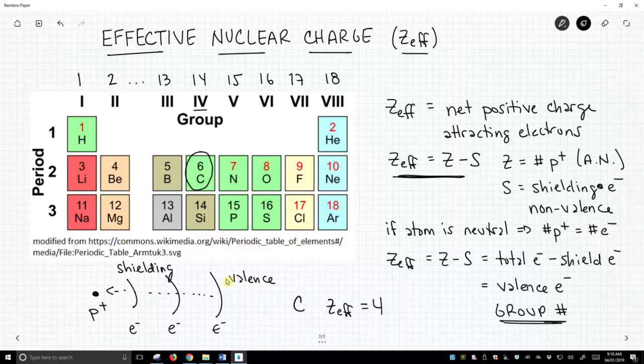In this case, carbon is in group 14. Well, its effective nuclear charge is not 14, but we just take off that tens place and we get four, and that is the effective nuclear charge for carbon. Likewise, what's the effective nuclear charge for oxygen?